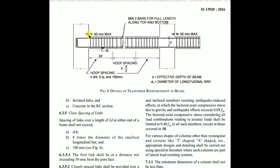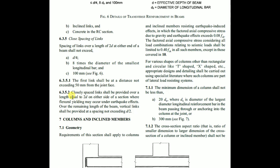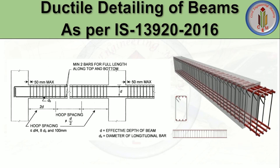Closely spaced links shall also be provided over a length equal to 2d on either side of a section where flexural yielding may occur under earthquake effects. Over the remaining length of the beam, vertical links shall be provided at a spacing not exceeding d/2, where d is the effective depth of the beam.